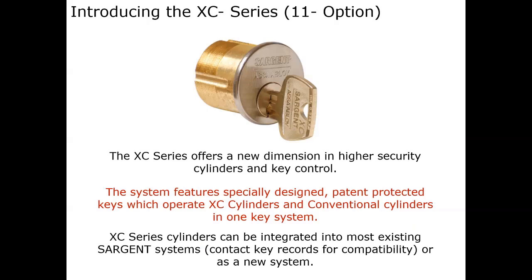Here's our XE series cylinder — another patented option from Sargent. We take a conventional cylinder and add features to gain a patent on it. You'll see the key has the XE logo above the word Sargent, and XE keys will work in both conventional cylinders and the XE cylinder as well. So you could have an existing key system — say an RA keyway — and upgrade that to an XE key system where the keys cannot be easily duplicated in the field. The XE master key will operate conventional RA cylinders already in place. So rather than replace a whole key system, you just replace a few perimeter door cylinders and add key control to your facility, issuing only XE keys to those that need them.